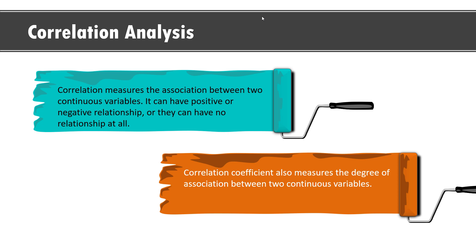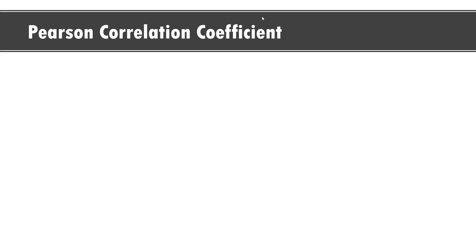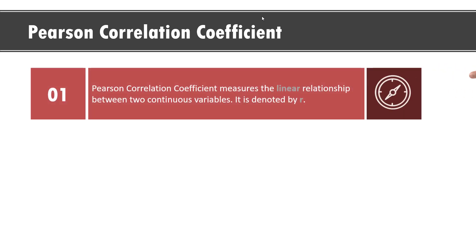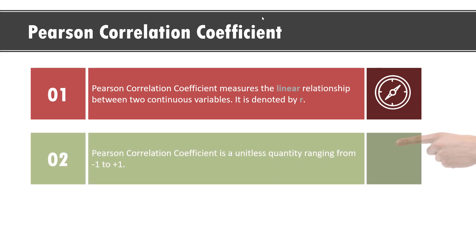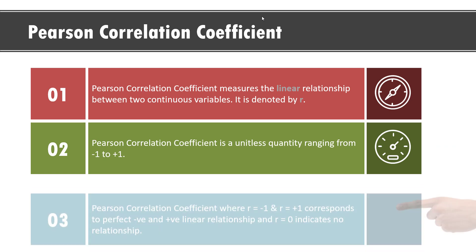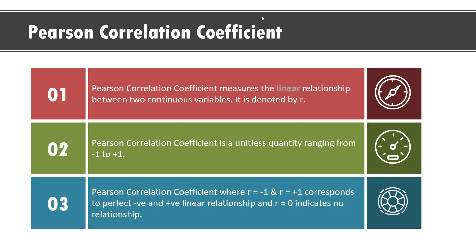Correlation coefficient is one of the most important statistics used by most data analysts and data scientists. A common correlation statistic used for continuous variables is the Pearson correlation coefficient. The Pearson correlation coefficient measures the linear relationship between two numerical variables. It is denoted by r. It is a unitless quantity ranging from minus 1 to plus 1, where r equal to minus 1 and r equal to plus 1 corresponds to perfect negative and positive relationship. And if r equals 0, it indicates no relationship.